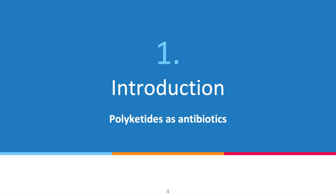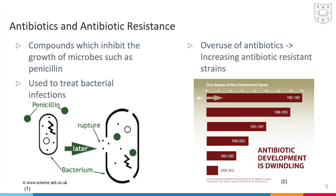Now let's introduce polyketides as antibiotics. Antibiotics are compounds that inhibit the growth of microbes, such as penicillin, and they can work by a variety of mechanisms. For example, penicillin damages the cell walls, causing the cells to rupture and die. They're very important because they're used to treat bacterial infections. However, overuse of antibiotics has led to an increasing number of antibiotic-resistant strains, and over time fewer and fewer new antibiotics have been discovered, thus leading to the antibiotic resistance crisis.